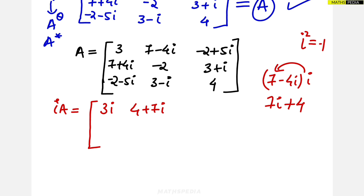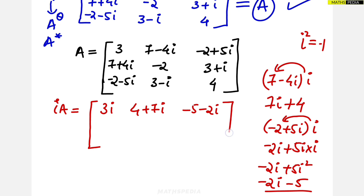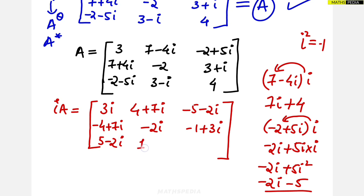For another example, −2+5i multiplied by i gives −2i + 5i² = −2i − 5, simplified as −5−2i. Doing this for all elements, the resulting i·A matrix is: 3i, 4+7i, −2i in the first row; −4+7i, −2i, −1+3i in the second row; and 5−2i, 1+3i, 4i in the third row.